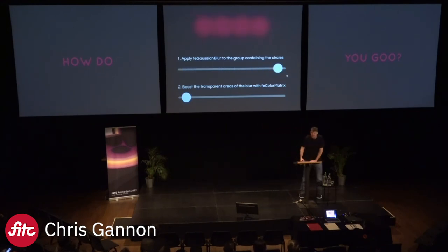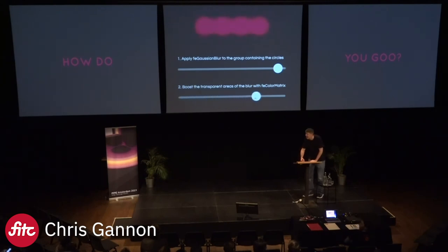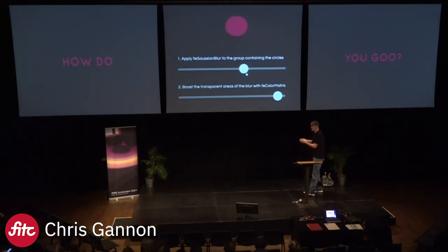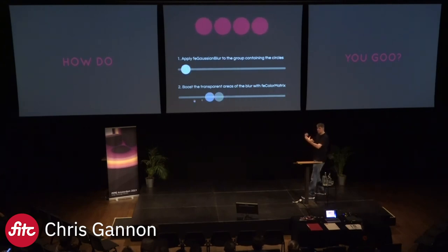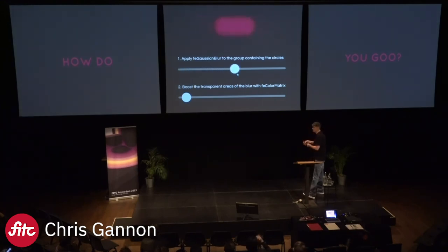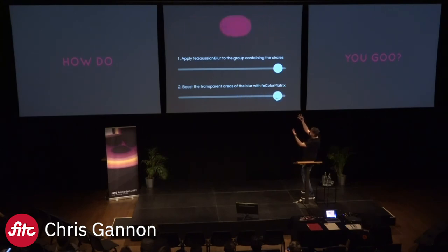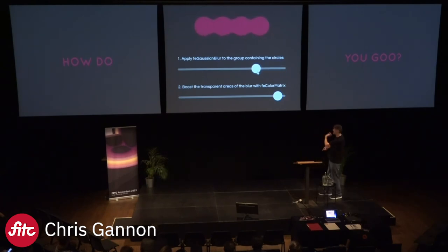Does anyone animate with SVG? Not very many. I want to show that goo is actually relatively straightforward to do. You apply a blur to all the stuff moving inside a group, then apply a filter called feColorMatrix, which boosts the transparent areas so overlapping areas boost together and create this liquid. That's how you goo. You can make things like lava lamps in SVG — they're quite realistic and completely random. People have bought these to have on digital displays in their house.